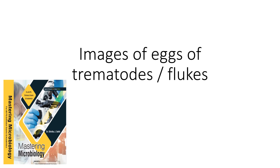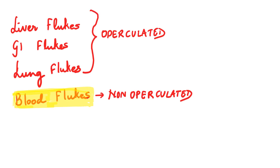Today, I am going to be discussing the images of the eggs produced by trematodes or the flukes. These helminths, which are the flukes, are broadly categorized into the following groups: liver, GI, lung flukes and blood flukes.